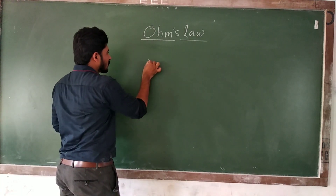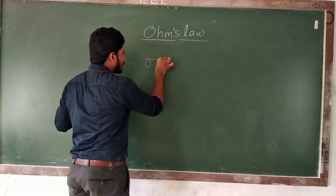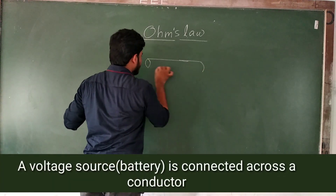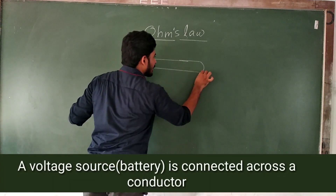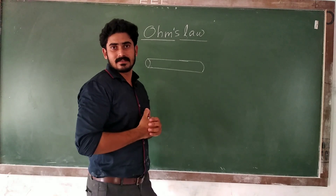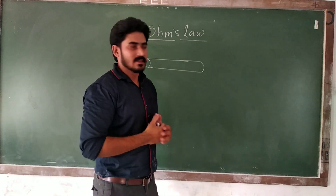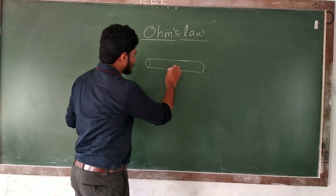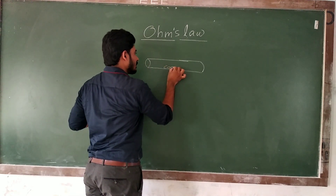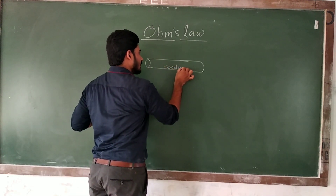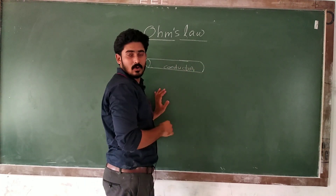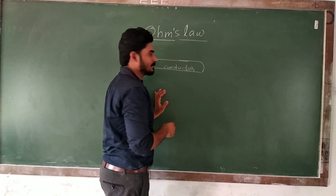One conductor. We have a conductor here. A conductor is something which conducts electric current. This is a conductor. It passes electricity or electric current.